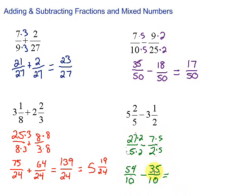And we are going to go ahead and subtract that straight across. 54 minus 35 is 19. Over 10.